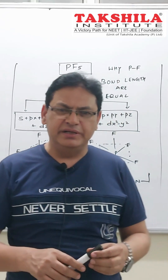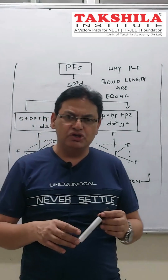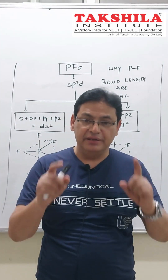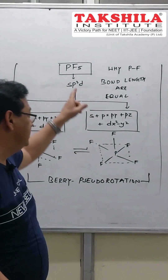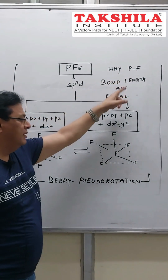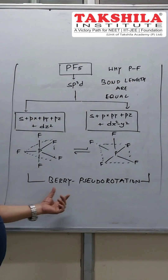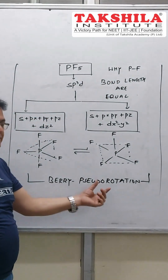In TBP geometry, the axial bond lengths and the equatorial bond lengths are different. But in this example — phosphorus pentafluoride (PF5) — all P-F bond lengths are equal. Why is this so? It is due to pseudo rotations.